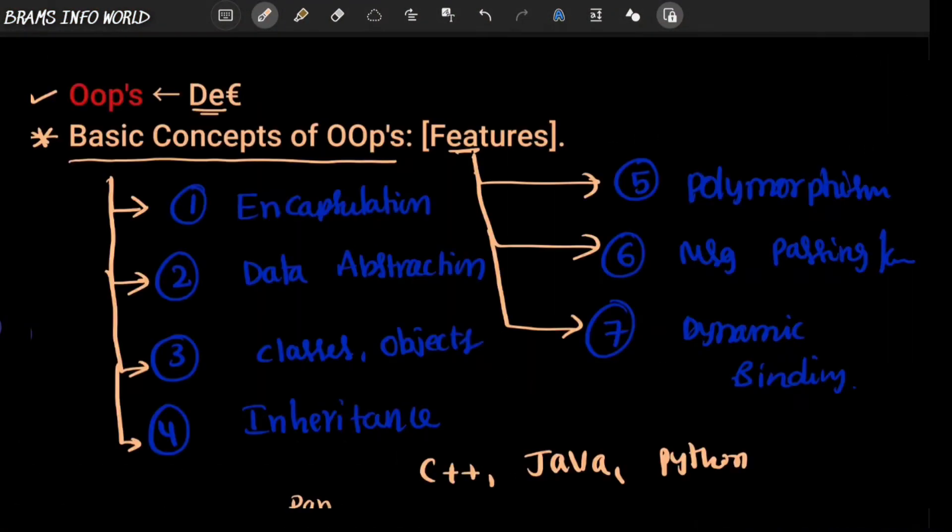So let us talk about the last feature called dynamic binding. Most people get confused while discussing dynamic binding, so let us understand with an example then you can easily know the definition.